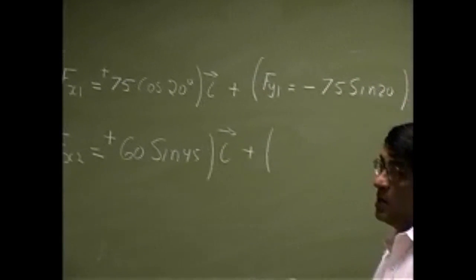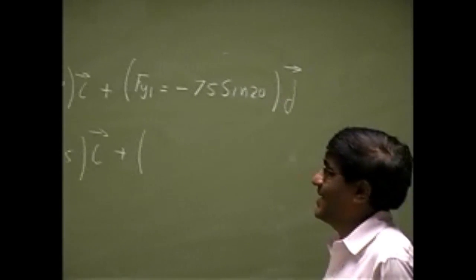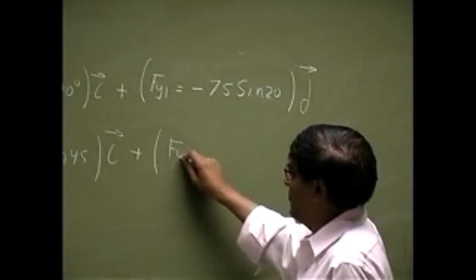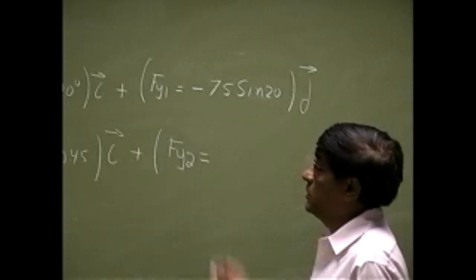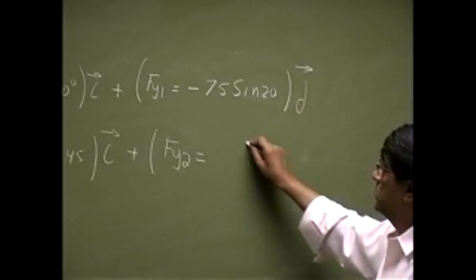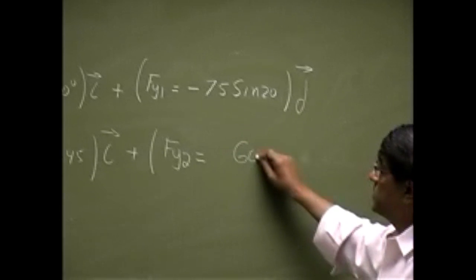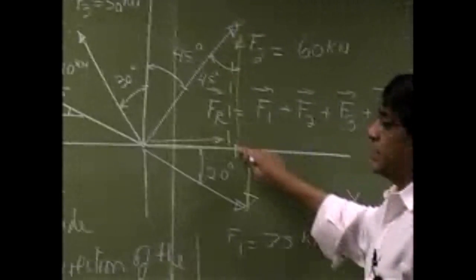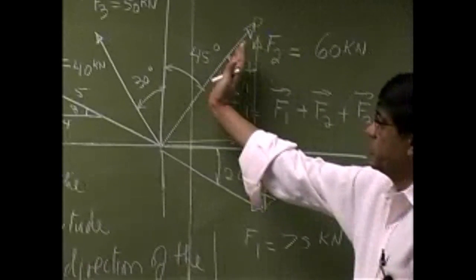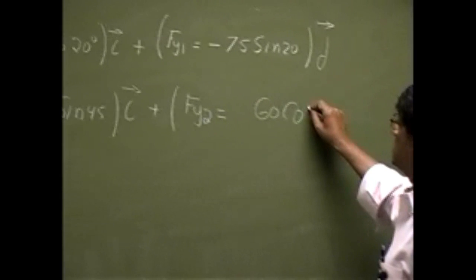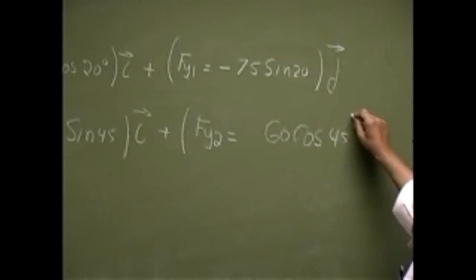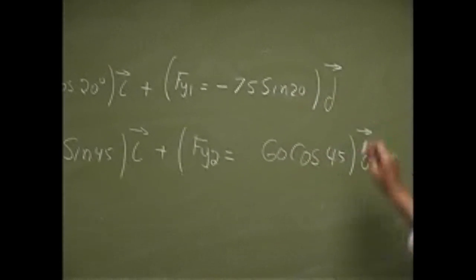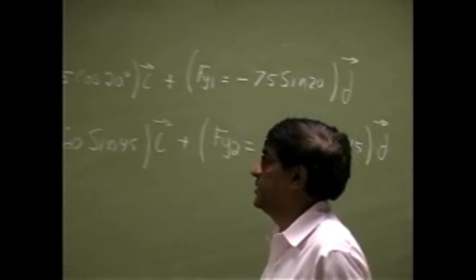Then you have Fy2. It will be 60 cosine of 45, and you multiply that by j.